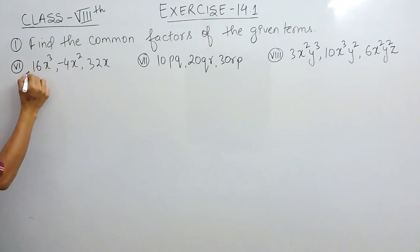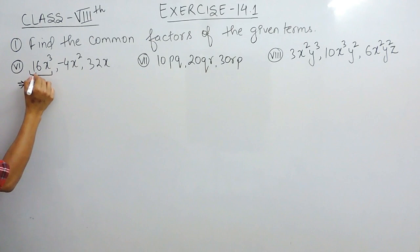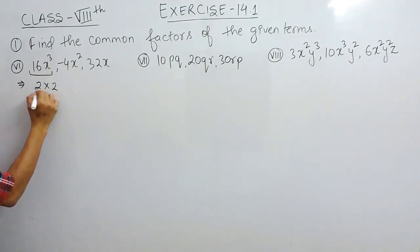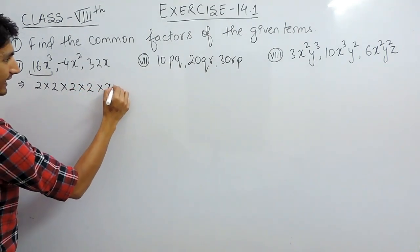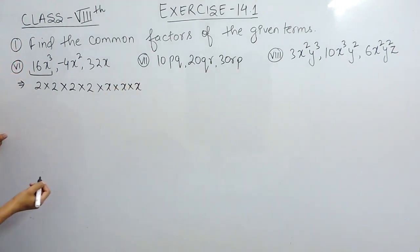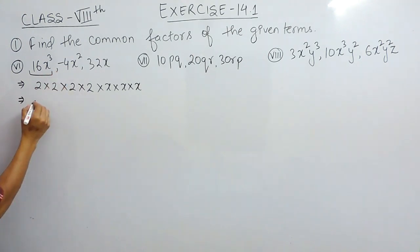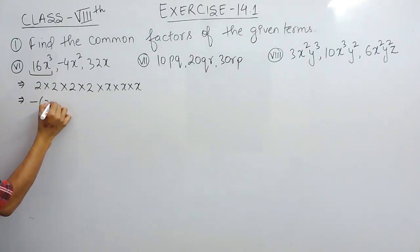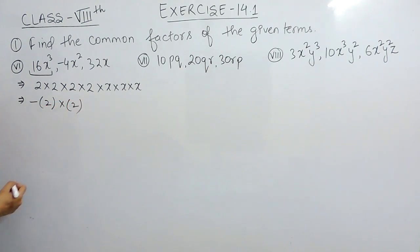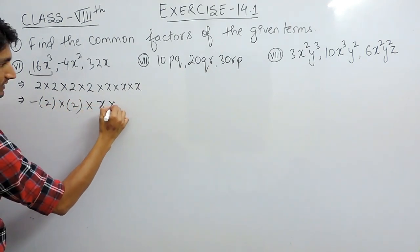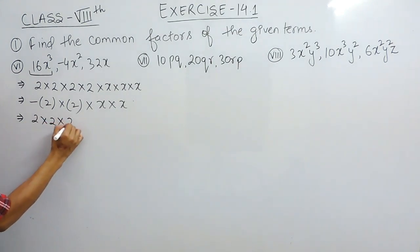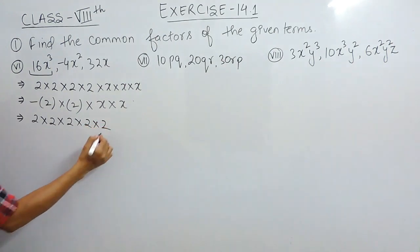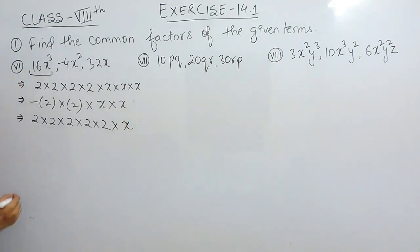First of all, what are the factors of 16x³? 16 can be written as 2 × 2 × 2 × 2, and x³ can be written as x × x × x. The second term, -4x², can be written as -1 × 2 × 2 × x × x. The third term, 32x, can be written as 2 × 2 × 2 × 2 × 2 × x. So these are the factors.